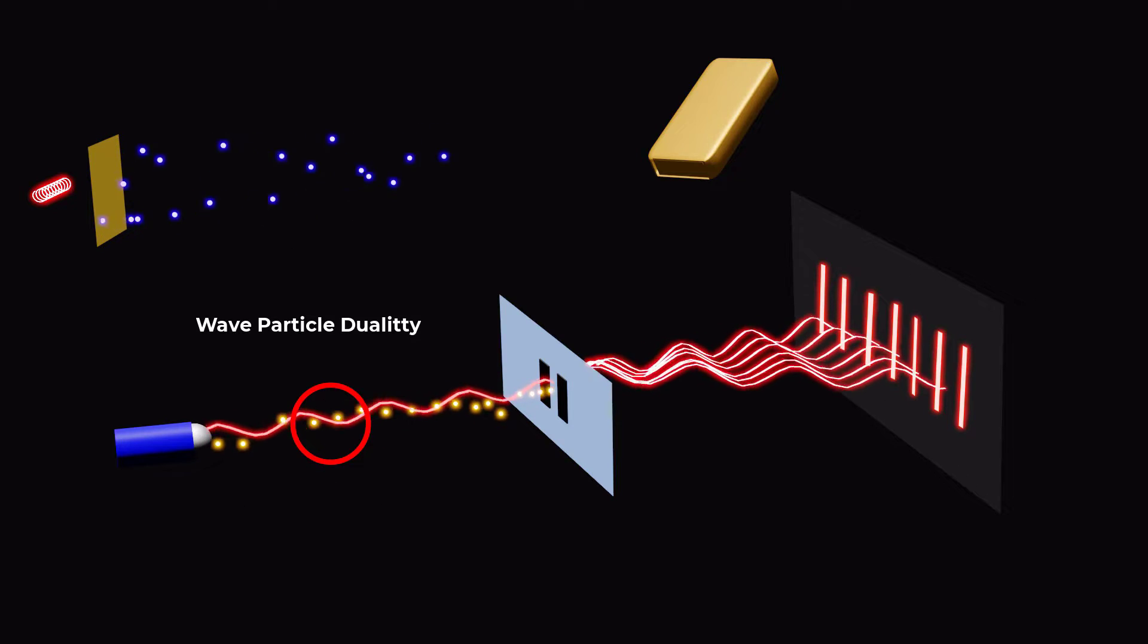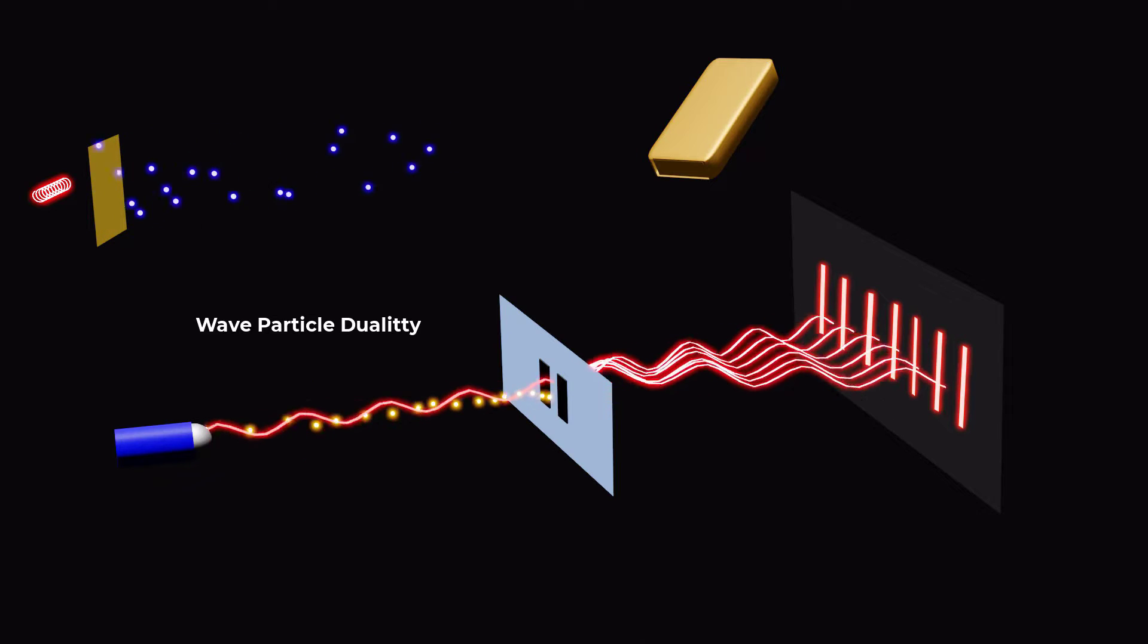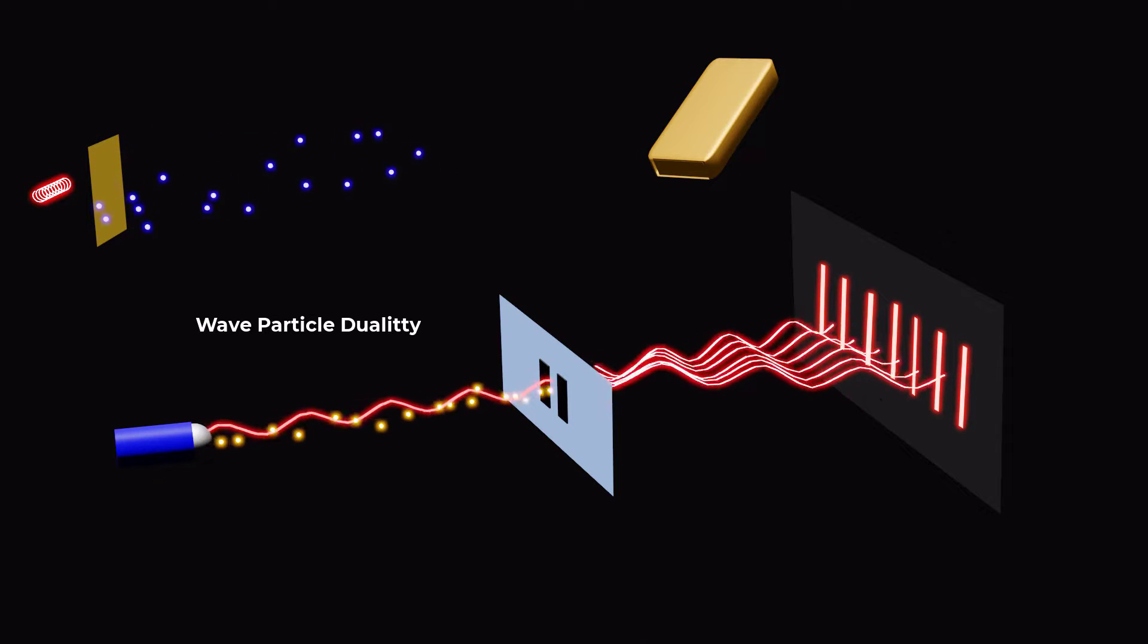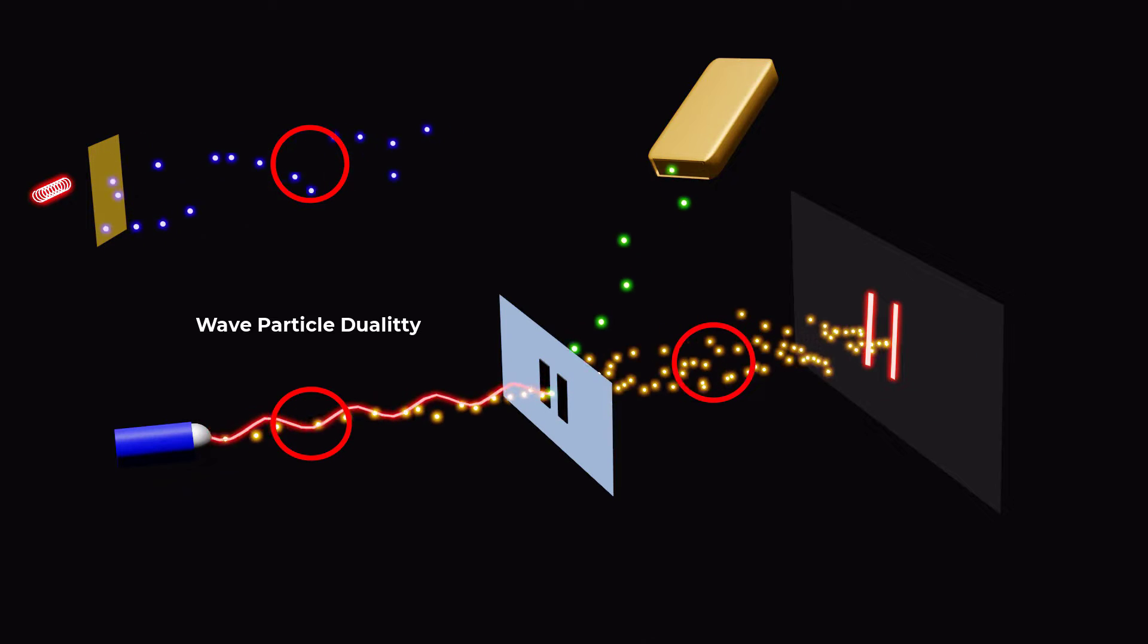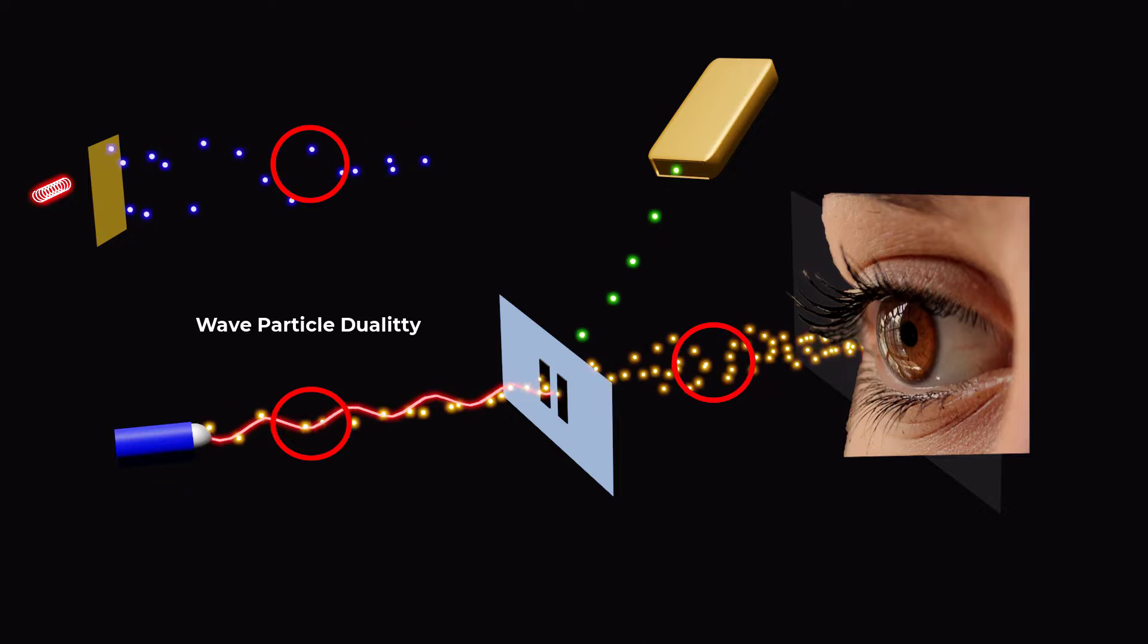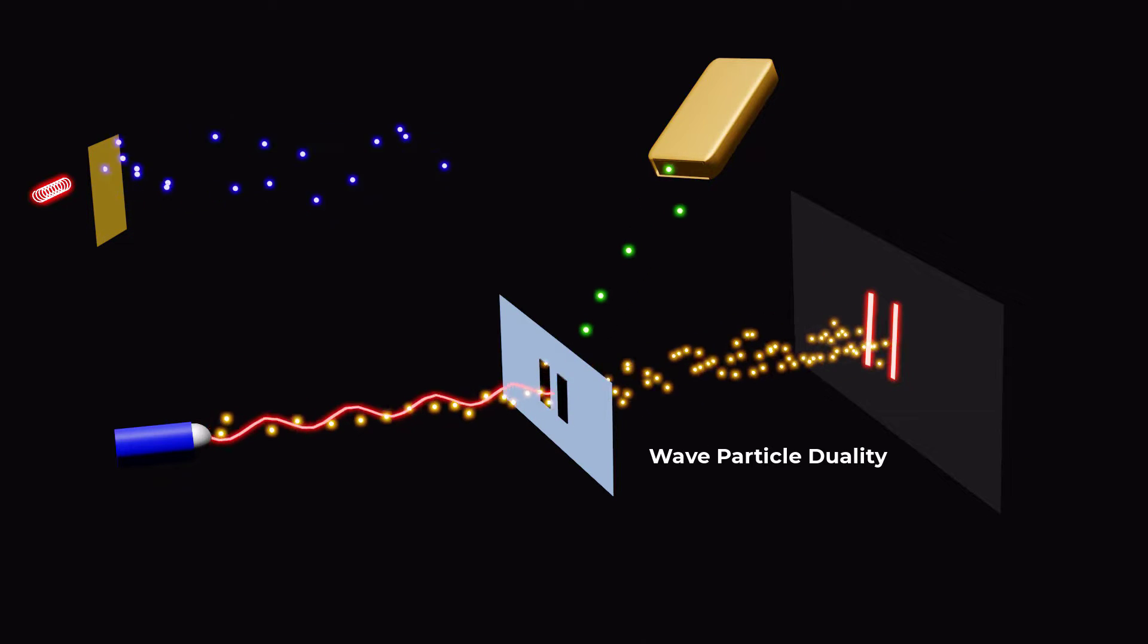The wave particle duality is one of the most important and fundamental concepts in quantum mechanics, which states that both matter and energy exhibit wave-like and particle-like properties depending on how they are observed. This concept is known as wave particle duality.